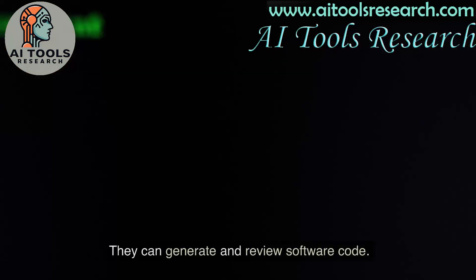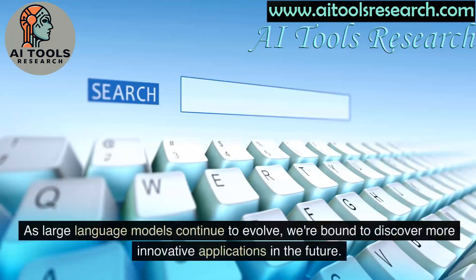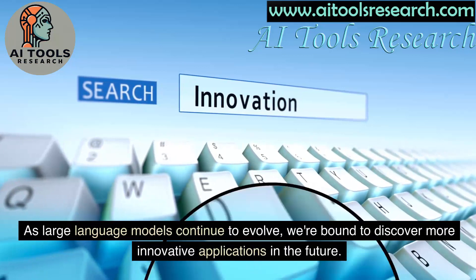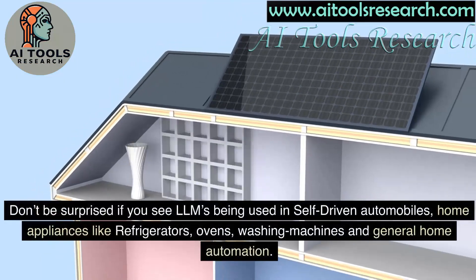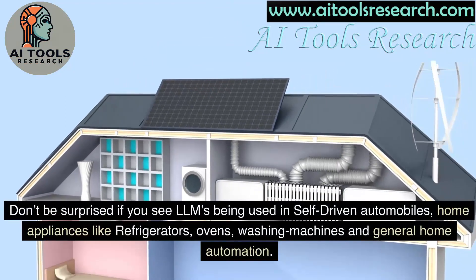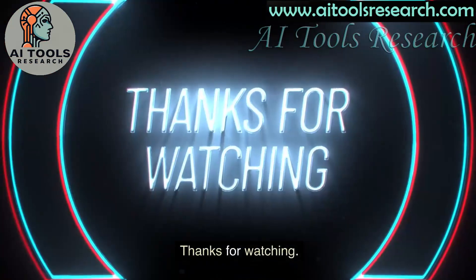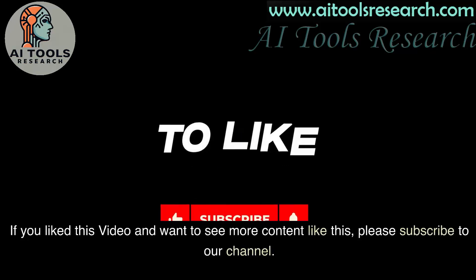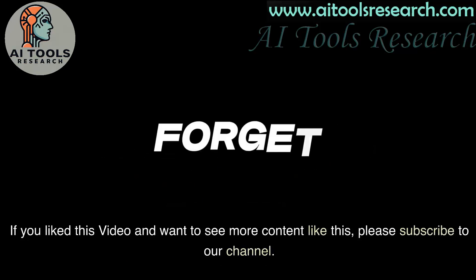LLMs are even contributing towards software development. They can generate and review software code. As large language models continue to evolve, we're bound to discover more innovative applications in the future. Don't be surprised you see LLMs being used in self-driven automobiles, home appliances like refrigerators, ovens, washing machines, and general home automation. And that's just scratching the surface. The best is yet to come. Thanks for watching. If you like this video, please subscribe to our channel for more content like this. And don't forget the like button.